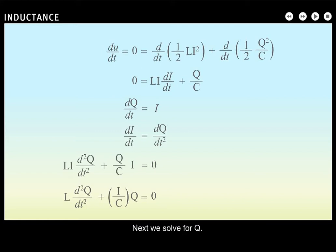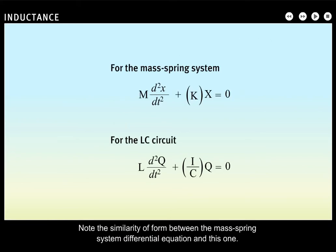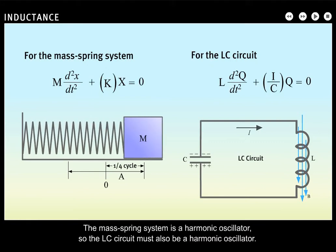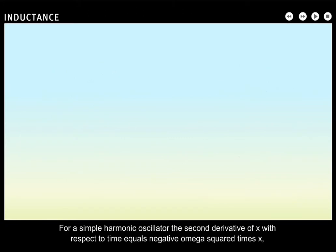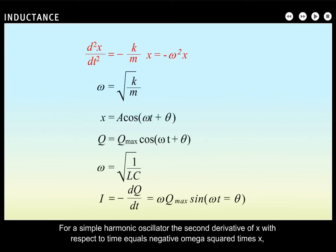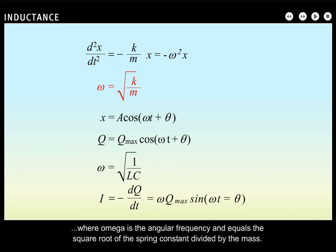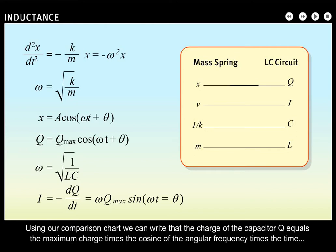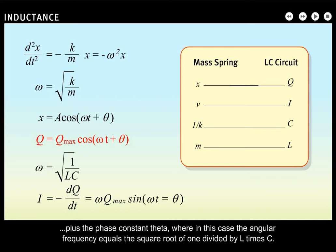Next, we solve for Q. Note the similarity of form between the mass-spring system differential equation and this one. The mass-spring system is a harmonic oscillator, so the LC circuit must also be a harmonic oscillator. For a simple harmonic oscillator, the second derivative of X with respect to time equals negative omega squared times X, where omega equals the square root of the spring constant divided by the mass. The general solution is X equals the amplitude times the cosine of the angular frequency times the time plus the phase constant theta. Using our comparison chart, the charge of the capacitor Q equals the maximum charge times the cosine of the angular frequency times time plus phase constant theta, where the angular frequency equals the square root of 1 divided by L times C.